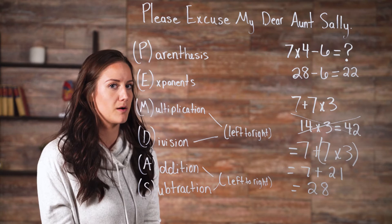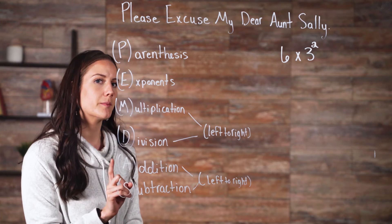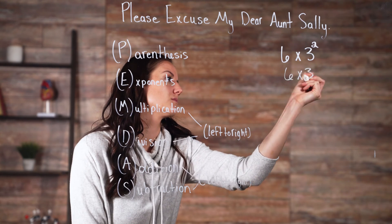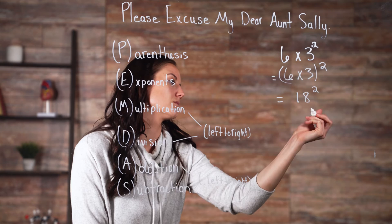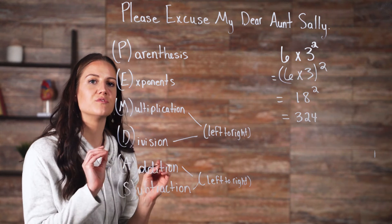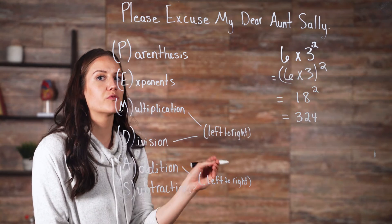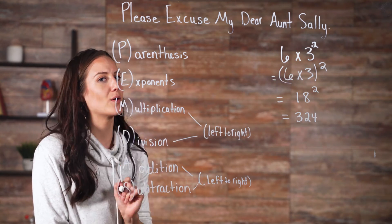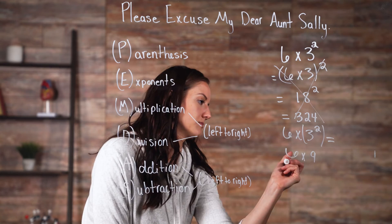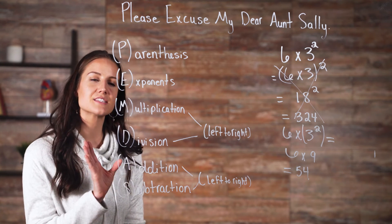Let's look at some more complex problems. The order of operations dictates how to solve this problem. Remember, you solve exponents first. Here's the wrong way to solve the problem — why is that wrong? Because you violated the order of operations. You do not multiply first. You perform the operation on the exponent first. This is how it should be done. Solving the equation in the right order provides the correct answer.